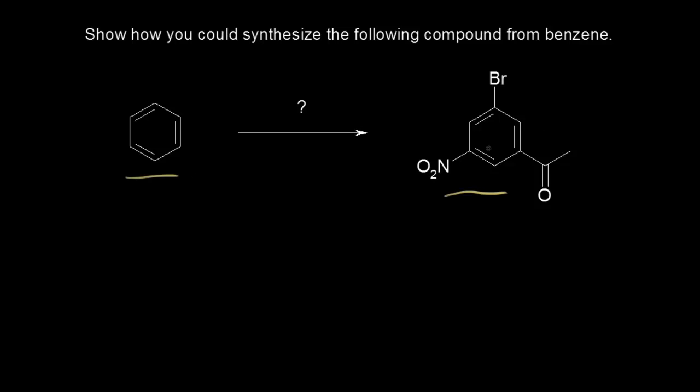One approach that you can use is the concept of retrosynthesis. You try to think backwards and ask yourself: what can be an immediate precursor to this molecule? To do that, we have to analyze the groups that are attached to our ring.